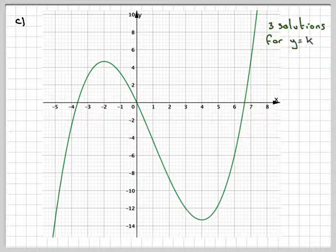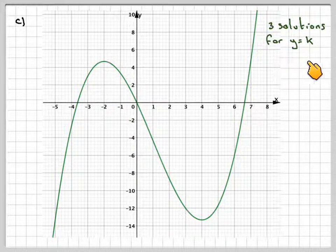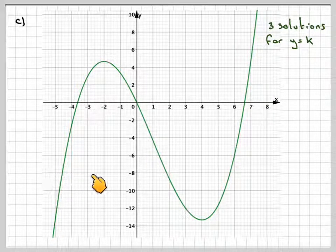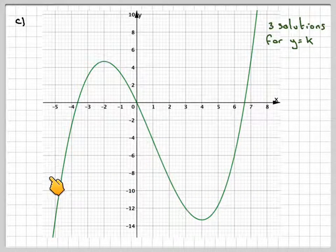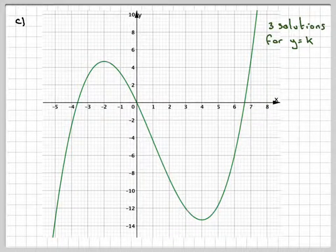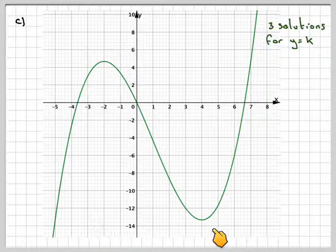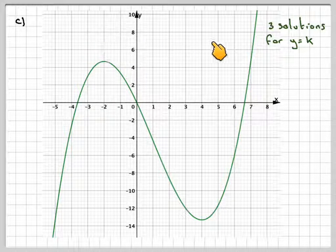Right, we need to now find three solutions of the graph of y is equal to k. Now y is equal to k is a horizontal straight line. So if we take this one here, for example, we will have three solutions because it will cut the curve three times. Here, down here, we'll only cut the curve once, and then here it will only cut the curve once.